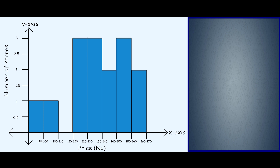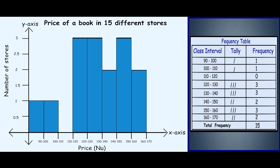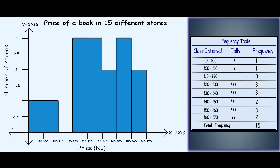Draw the height of each bar corresponding to the frequency of the bin it represents. This is how a histogram will look like. After the histogram has been drawn, we always need to give the title of the histogram indicating what information it represents.